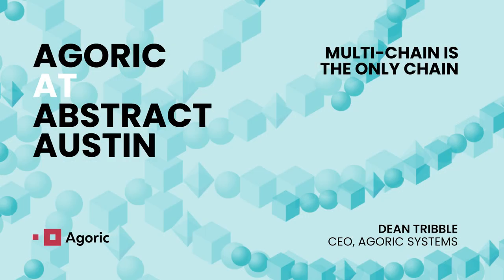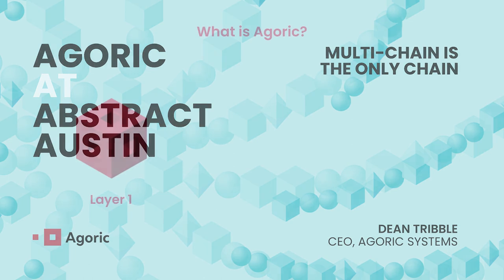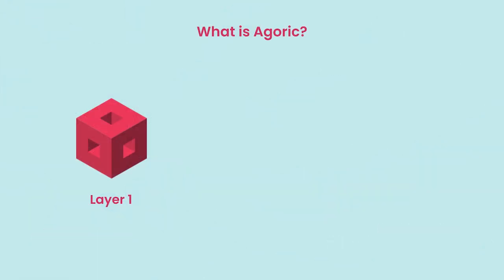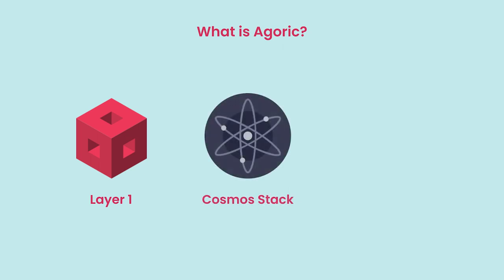I'm Dean Tribble, CEO of Agoric. Agoric is a layer one chain powered by the BLD staking and governance token using the Cosmos technology stack, where we deliver a platform for JavaScript smart contracts. What's important about the platform and JavaScript smart contracts is it turns out to line up with what developers need to deliver chain abstraction solutions.